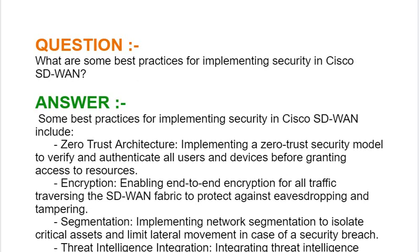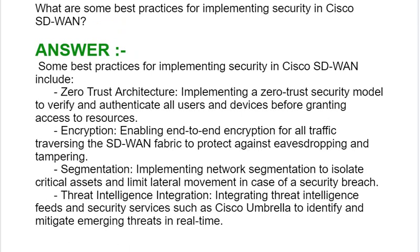Next interview question: What are some best practices for implementing security in Cisco SD-WAN? Some best practices include: First, Zero Trust Architecture — implementing a Zero Trust security model to verify and authenticate all users and devices before granting access to resources. Second, Encryption — enabling end-to-end encryption for all traffic traversing the SD-WAN fabric to protect against eavesdropping and tampering.